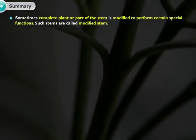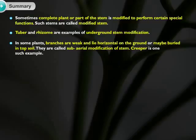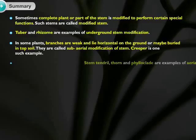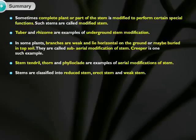Sometimes, a complete plant or part of the stem is modified to perform certain special functions. Such stems are called modified stems. Tuber and rhizome are examples of underground stem modification. In some plants, branches are weak and lie horizontal on the ground or may be buried in topsoil — these are called sub-aerial modifications of stem. Stem tendril, thorn, and phylloclade are examples of aerial modifications of stem. Stems are classified into reduced stem, erect stem, and weak stem.